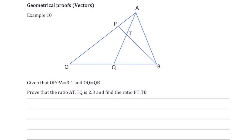The question asks: given OP to PA equals 3 to 1 and OQ equals QB, prove that the ratio AT to TQ is 2 to 3, and find the ratio PT to TB. The first thing we're going to do is look at what we've been given and put some information on the diagram.